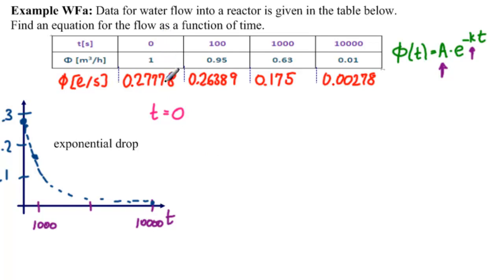off the table, what do we have? 0, 2.778. So fee of 0 equals 0.27778. And if we look at our function,